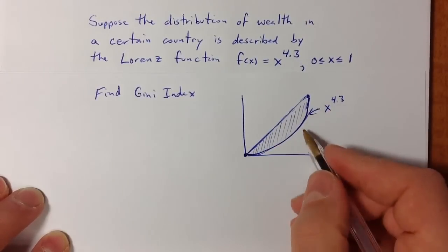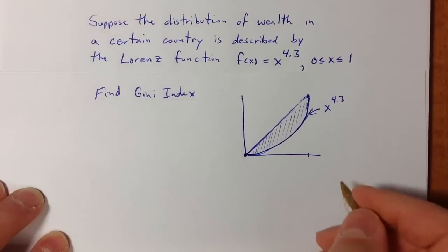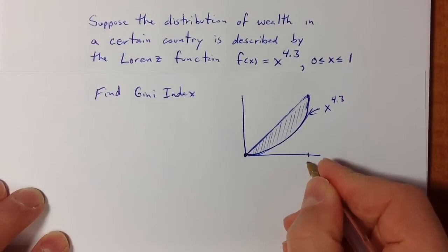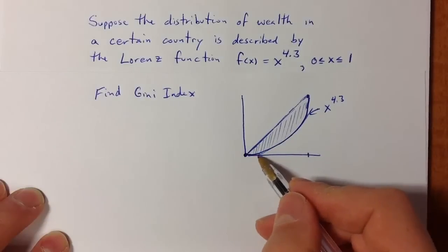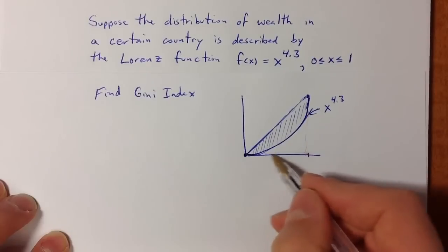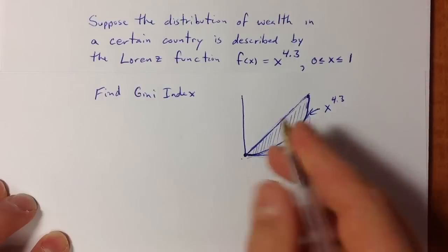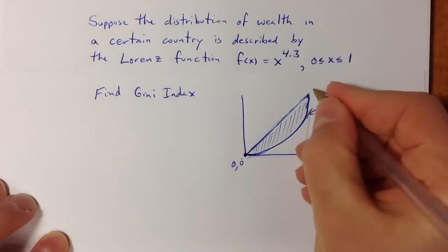Because the largest that area could possibly be—if the distribution was completely unequal—would be the area of the triangle from (0,0) to (1,1).